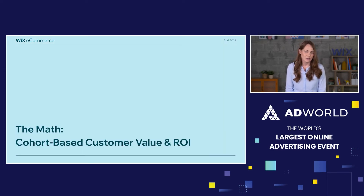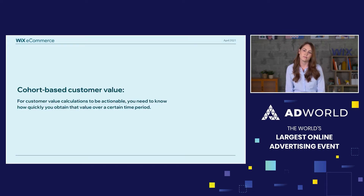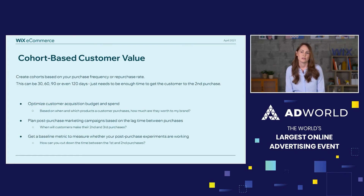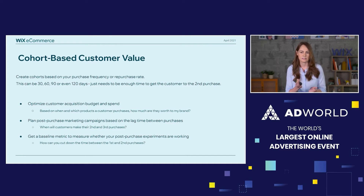This brings us to cohort-based customer value and ROI, which helps focus on short-term challenges. For customer value calculations to be actionable, you need to know how quickly you'll obtain that value over a certain period of time. We create cohorts based on purchase frequency or repurchase rate — a cohort is a group of customers who join during the same period, such as 30, 60, or even 120 days. We just need enough time to get the customer to that second purchase. By looking at these shorter-timeframe cohorts, we can actually optimize our acquisition budget and spend, knowing when and which products customers are purchasing and how much they're worth to the brand.